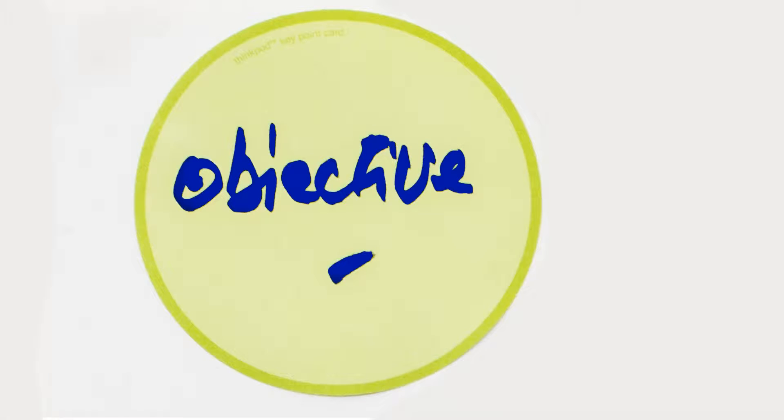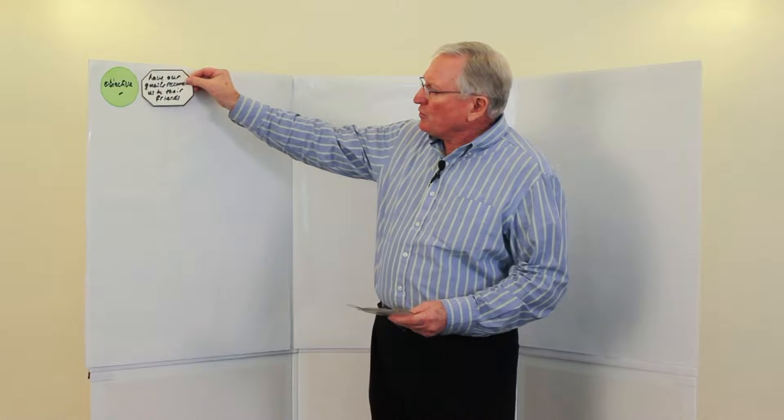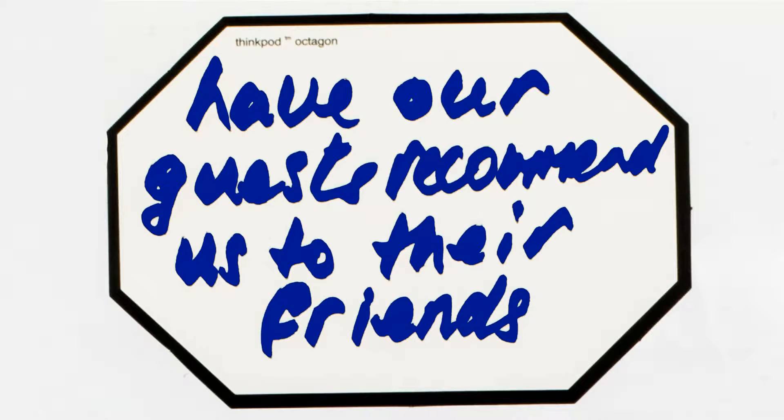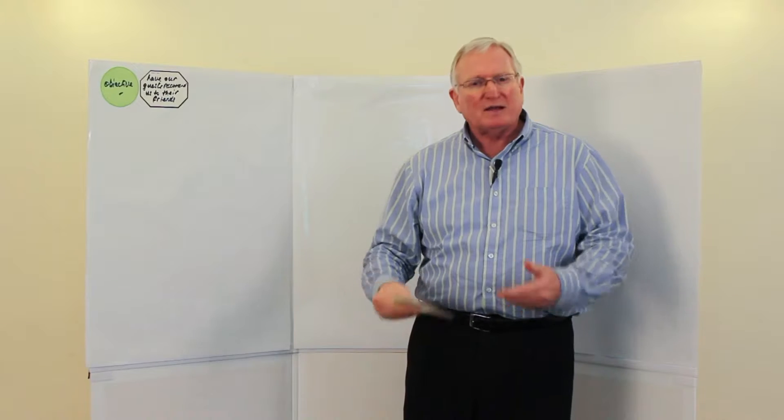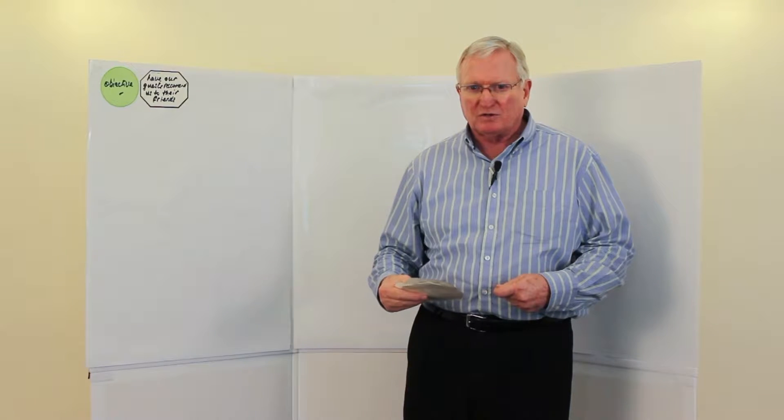So the first step in a strategy there would be to say, what is our objective of this meeting? And we would all sit down and discuss that and say, well, essentially what we want is our guests, when they leave the restaurant, to have had such a great experience that they tell all their friends and colleagues they should eat at this restaurant.